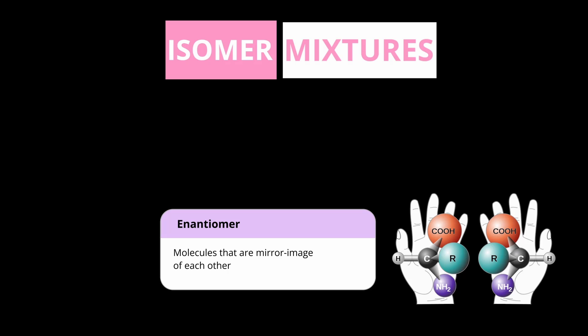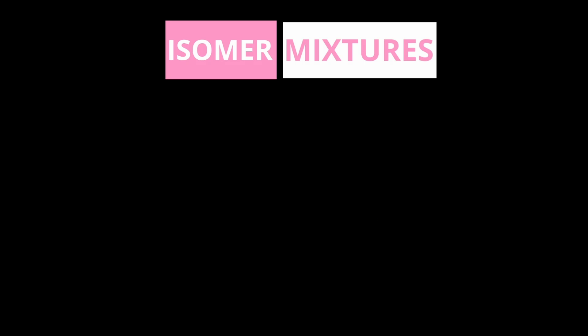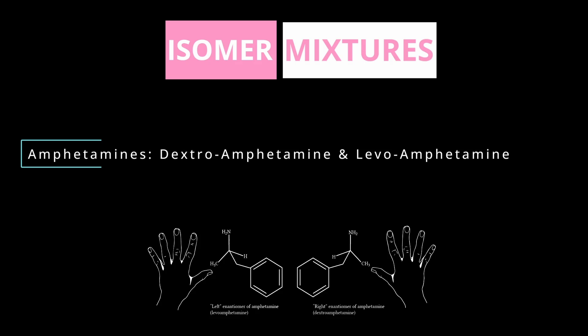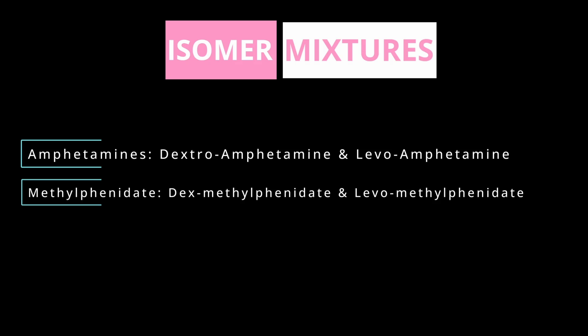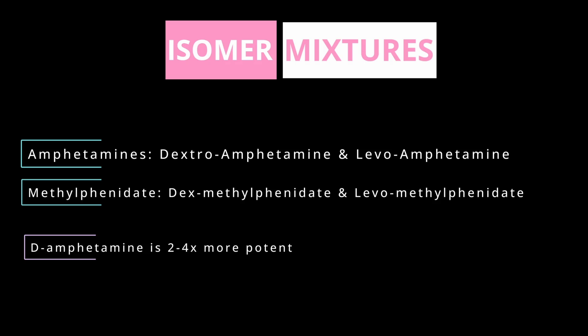Enantiomers can have different effects on the body, and we see this with several psych drugs — citalopram and escitalopram, ketamine and s-ketamine, and modafinil and r-modafinil. For the amphetamines, the left hand is levoamphetamine and the right hand is dextroamphetamine. For methylphenidate, the left hand is levomethylphenidate and the right hand is dexmethylphenidate.